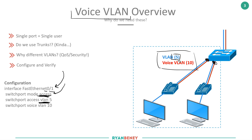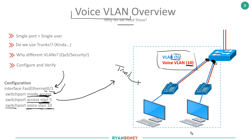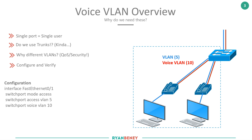The downstream ports to all the phones and PCs are configured as access. You use `switchport mode access` and set the data VLAN normally, but now there's a new command: `switchport voice vlan 10`. That single command ensures this access port is actually allowed two VLANs. So yes — mode access, but with two VLANs: one data, one voice. The alternative is configuring it as a trunk, but that's no longer recommended by Cisco. Other vendors don't have the luxury of `switchport voice vlan`.